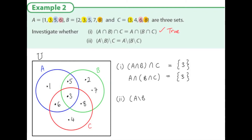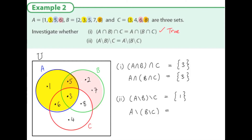Second part: what is the value of (A not B) not C? I color A not B in yellow and C in pink. What's in the yellow but not in the pink is element one. Is that the same as A not (B not C)? I color A first, then B not C — the parts of B not in C. What's in yellow but not in pink gives elements one, three, and six. So clearly these two are not equal.